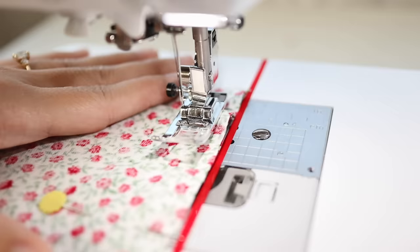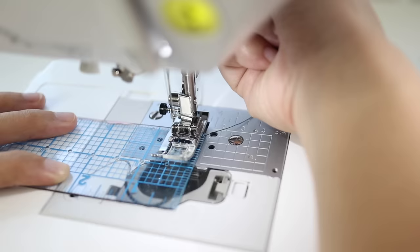Another way to mark your seam allowance if you don't want to mark your fabric is to place a tape or rubber band at however much your seam allowance is to use as a guideline for the edge of your fabric to follow.